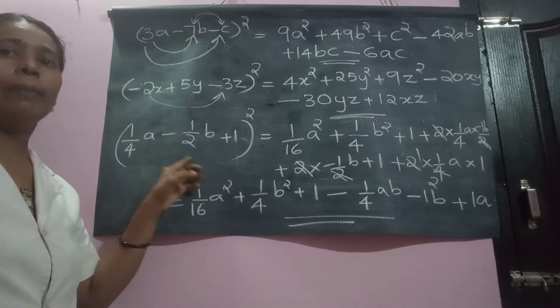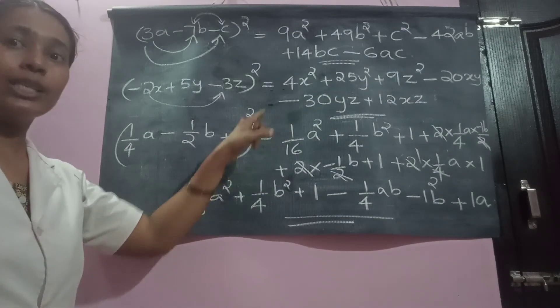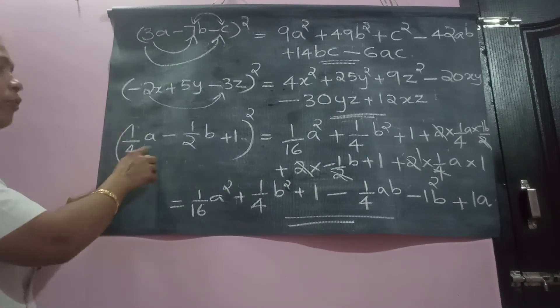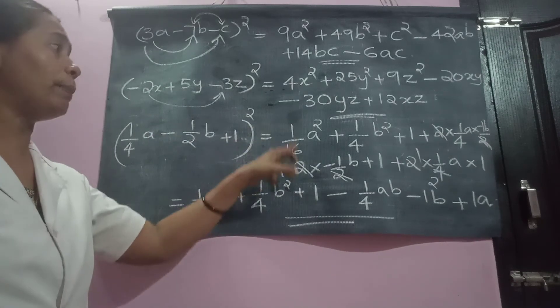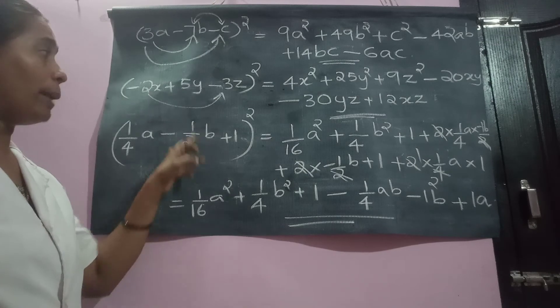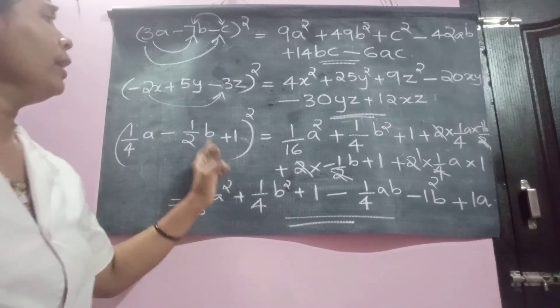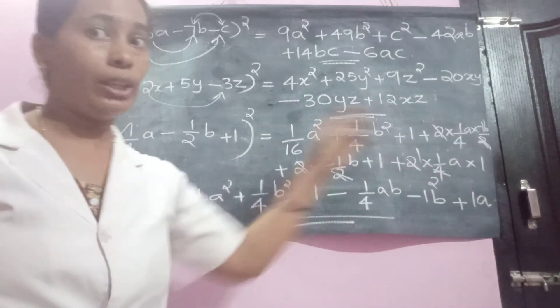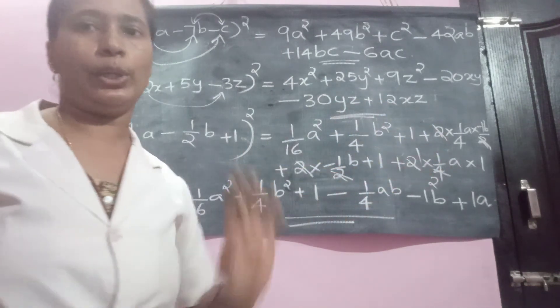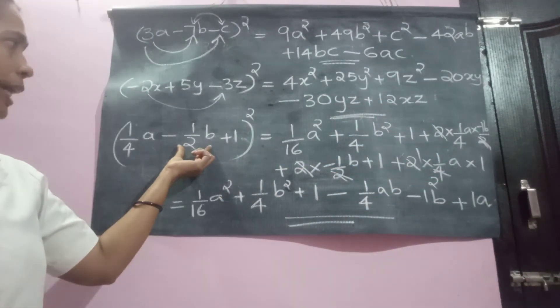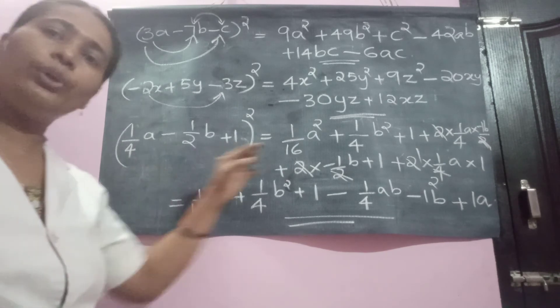Let us move to one more of the type. 1 by 4A minus 1 by 2B plus 1 the whole square. Since it is a fraction, square numerator, square denominator, square the variable. So, 1 by 4A becomes 1 square is 1. 4 square becomes 16A square become A square. So, 1 by 16A square. This term become 1 by 4B square. And last one become 1 square 1. Then, we have to multiply directly. Don't write because these are all fractions. So, these are all 2 into 1 by 4A into minus 1 by 2B plus 2 into minus 1 by 2B into 1 plus 2 into 1 by 4A into 1.